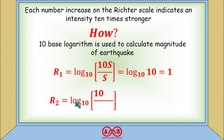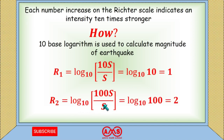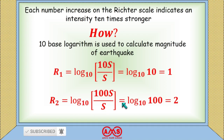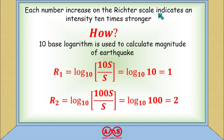For R₂, log₁₀(100S / S) — that is, 10 times R₁'s earthquake, which is 100S — equals log₁₀(100) = 2. That is, each unit increase on the Richter scale indicates an intensity 10 times stronger.